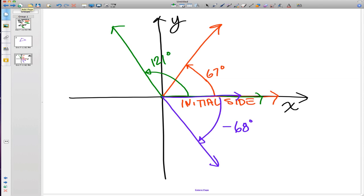And then if I do this black one from here up to here, that might have a measure of negative 162 degrees, or something to that effect.